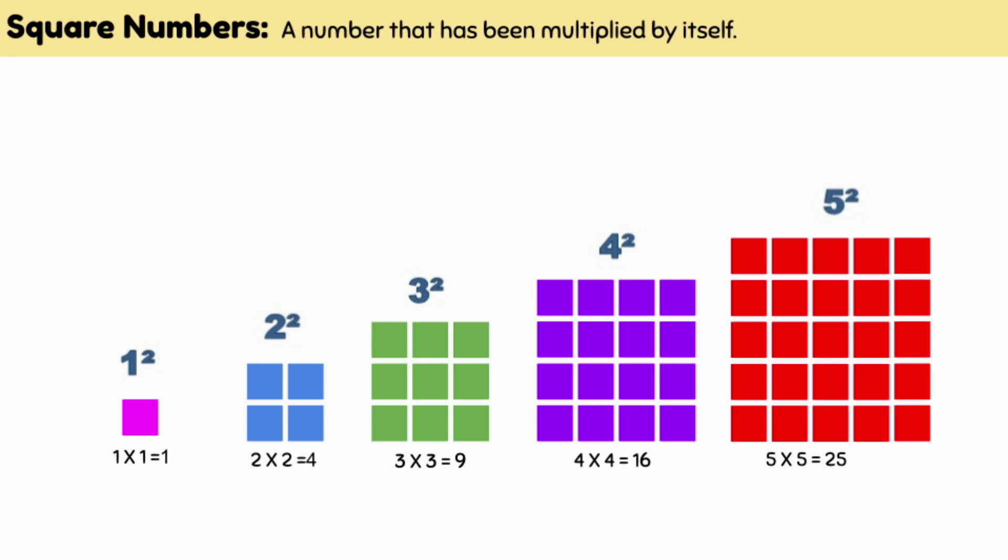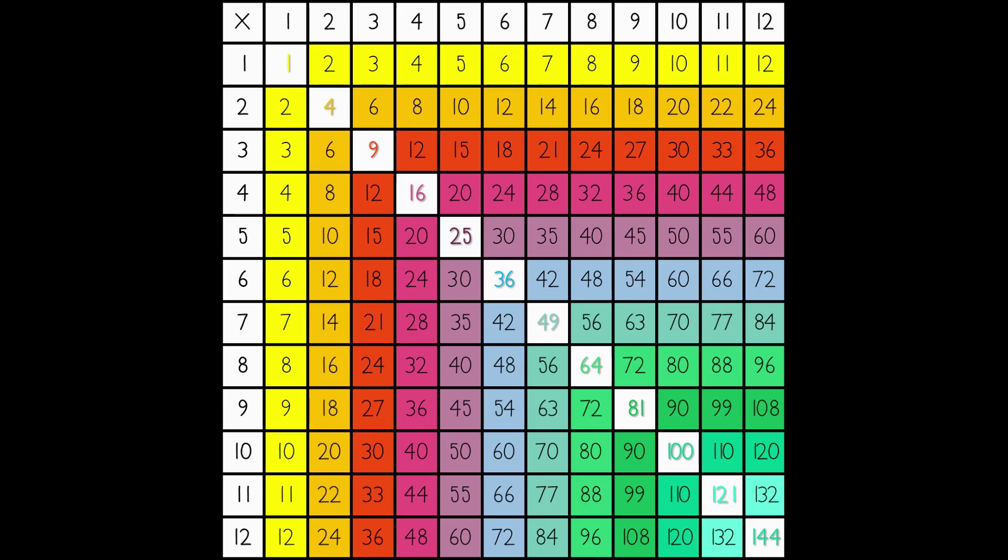So a square number is any number that is the answer to a times table where the number is multiplied by itself. Have a look at the square numbers on this multiplication chart.